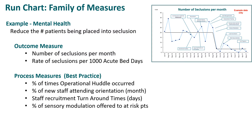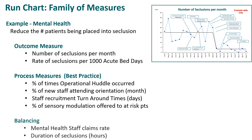The process measures were around best practice. Examples include the percentage of times an operational huddle occurred, the percentage of new staff attending orientation within a month, the staff recruitment turnaround times in days, and the percentage of sensory modulation offered to at-risk patients. For balancing measures, they looked at mental health staff claims rates and also the duration of seclusion in hours.